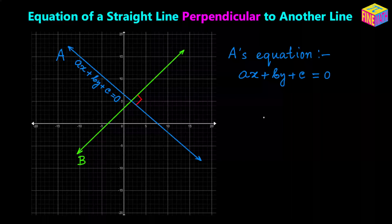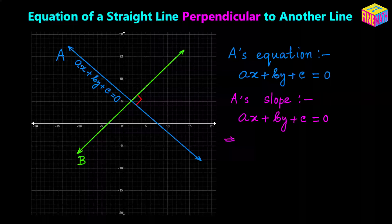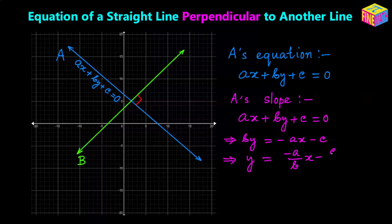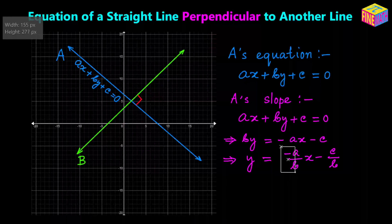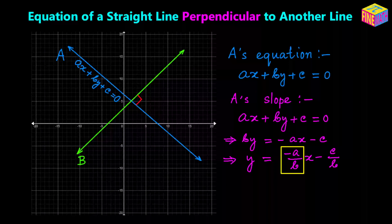From the given equation of straight line A, can we find the slope of line A? Let's try to convert the equation into the Y equals MX plus C form. Isolating Y: BY equals negative A times X minus C, so Y equals negative A over B times X minus C over B. The slope of straight line A is negative A over B.